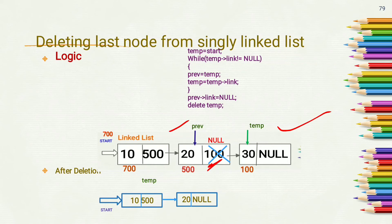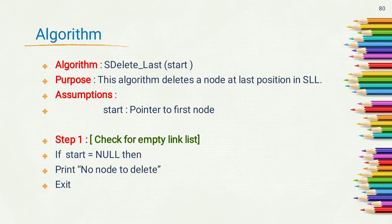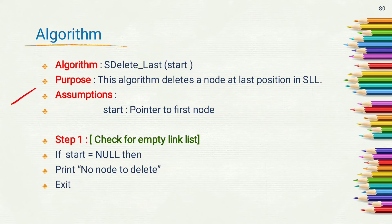Finally we change the link part of the previous node to null and delete the temp node. Now the algorithm for deleting the last node: the algorithm name is s_delete_last and the parameter required is start. The purpose is to delete a node at the last position in a singly linked list. Assumption: start is a pointer to the first node. Step 1: check for an empty linked list — if start equals null, print 'no node to delete' and exit.